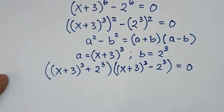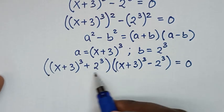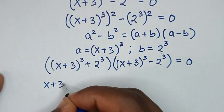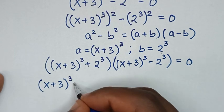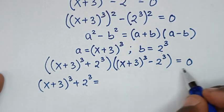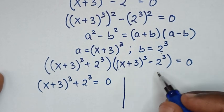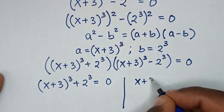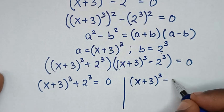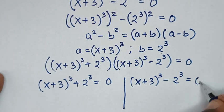From here we have two solutions. The first solution is (x + 3)^3 + 2^3 = 0, and the second solution is (x + 3)^3 - 2^3 = 0.